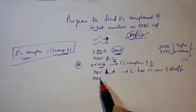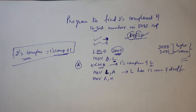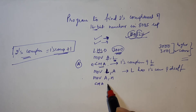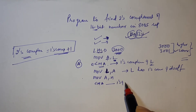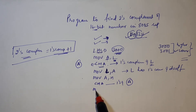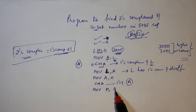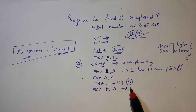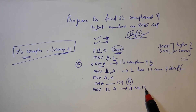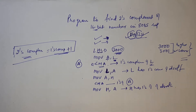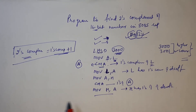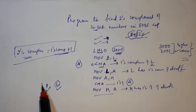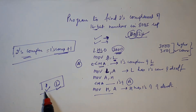In the same manner, we move H into the accumulator and use CMA to find the 1's complement of H. Then MOV H, A stores the result back in H. Now L has the 1's complement of the lower byte and H has the 1's complement of the higher byte.